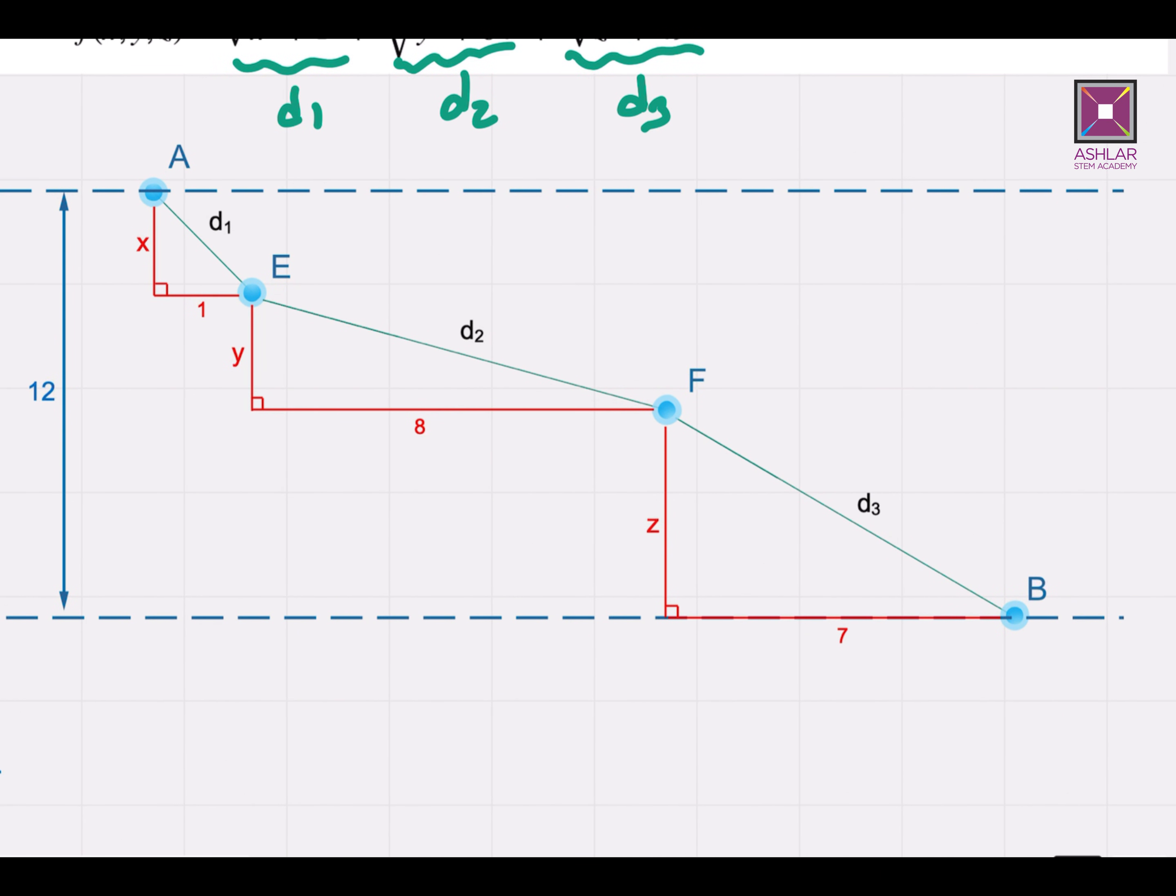So first I move from A to E, then from E to F, and then F to B. So the vertical displacements are x, y, and z. And in the horizontal direction, I move one unit first, and then eight units, and then seven units. So eight is the square root of 64, seven is the square root of 49.